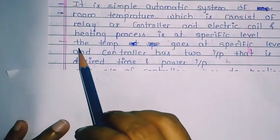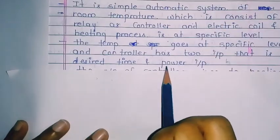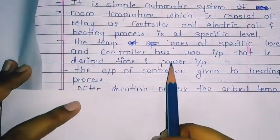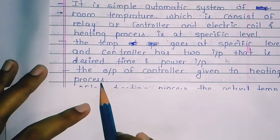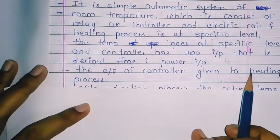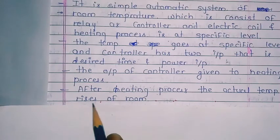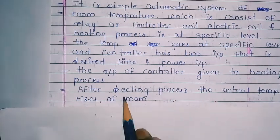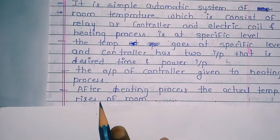The temperature goes to a specific level and the controller has two inputs: desired time and power input. The controller output is given to the heating process. After the heating process, the actual room temperature rises — the room temperature increases.